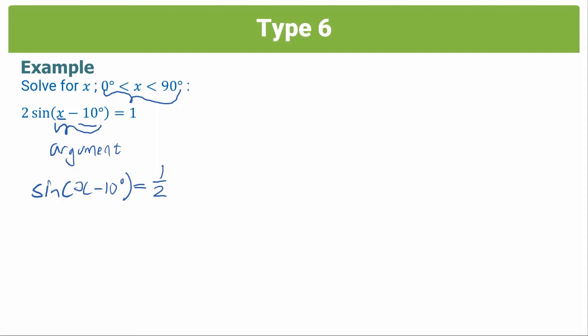Now step two is to use your calculator to find the value of the argument. However, if you knew your special angles, you'd know that the inverse of sine, so sine 1/2, is going to give you 30 degrees. But if you weren't sure about this, you could check on your calculator.